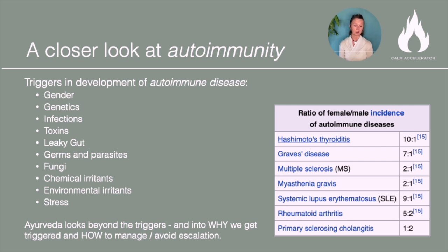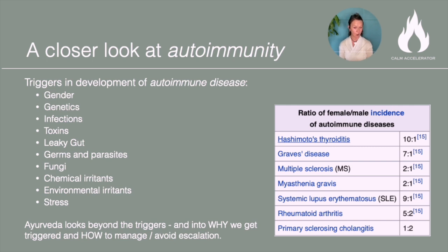Also toxins — toxins in our environment, in our water, in our food, toxins in the cosmetics we put on our body. Leaky gut has been implicated in all autoimmune diseases, and in fact is present in all autoimmune diseases.